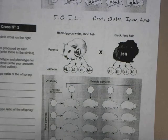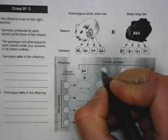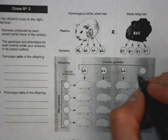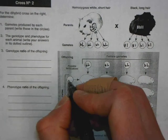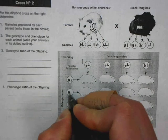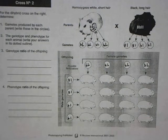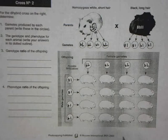Now that I have the parents' gametes, I can fill those into the chart. The female gametes are: little b capital L, little b capital L, little b capital L, and little b capital L. The male gametes are: capital B little l, capital B little l, little b little l, and little b little l. Just like the previous chart, I can fill in the individual sections to complete my Punnett square and then calculate the genotype and phenotype ratios.